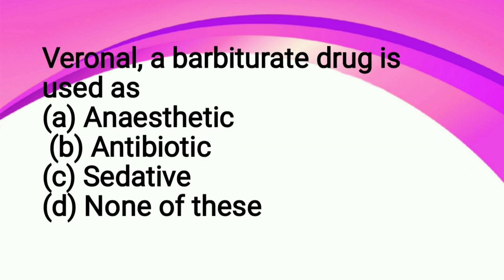Veronal, a barbiturate drug, is used as: A anesthetic, B antibiotic, C sedative, D none of these. So the correct answer is C sedative. These barbiturates are drugs that are used as sedatives, which bring our brain to calmness, relaxing, or a drowsiness condition.